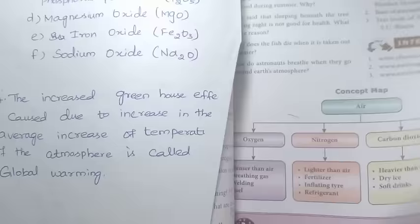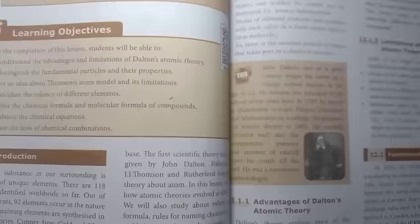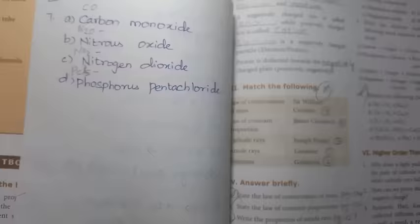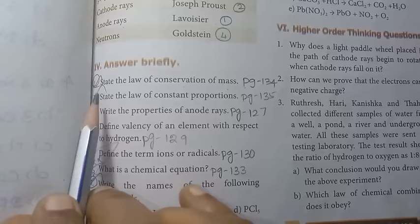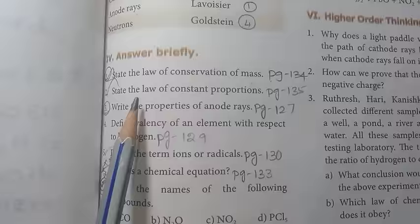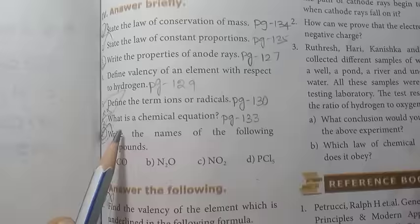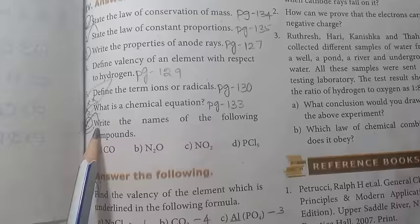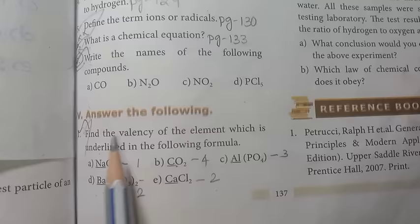Page number 124, Unit 12, Atomic Structure. In this lesson, look at the one marks full. Answer briefly: State the law of conservation of mass, important question. State the law of constant proportions, this is important. Write the properties of anode rays, this is important. What is the chemical equation? This is repeated, so give more importance, very very important question.